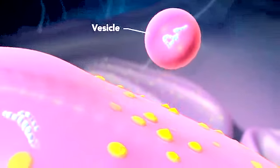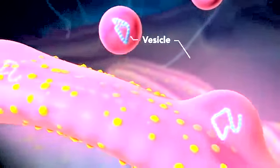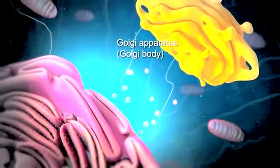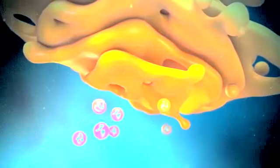Proteins and other materials emerge from the endoplasmic reticulum in small vesicles, where the Golgi apparatus, sometimes called the Golgi body, receives them.